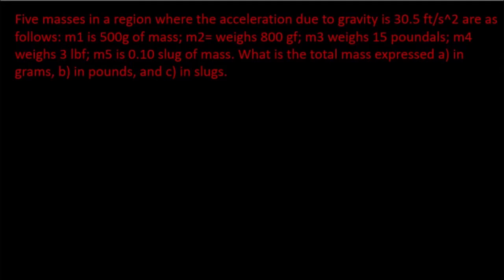We have another problem on masses and weights. We have five masses in a region where the acceleration due to gravity is 30.5 feet per second squared. m1 is 500 grams of mass, m2 weighs 800 gram-force, m3 weighs 15 poundals, m4 weighs 3 pound-force, and m5 is 0.1 slug of mass. We need to find the total mass expressed in grams, in pounds, and in slugs.